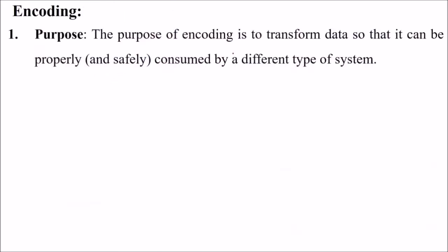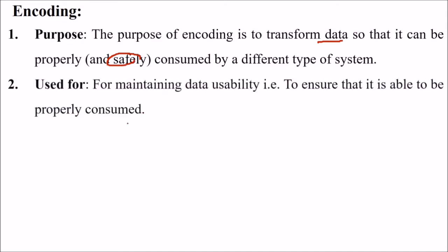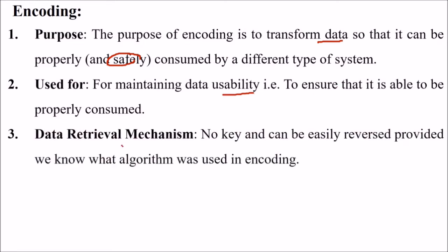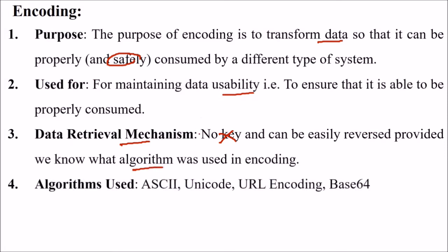The purpose of encoding is to transform data so that it can be properly and safely consumed by different types of systems. It is used for maintaining data usability — to ensure data can be properly consumed. There is no key required, and it can be easily reversed provided we know which algorithm was used. Algorithms used include ASCII, Unicode, URL encoding, and Base64.